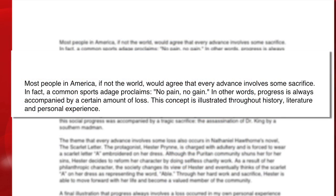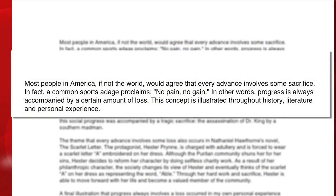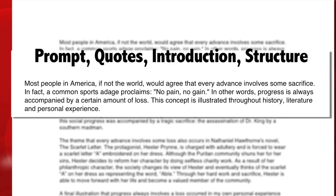The last sentence of the first paragraph I call a roadmap. The roadmap here is: 'This concept is illustrated throughout history, literature, and personal experience.' That's a pretty representative intro for an essay — it encapsulates the prompt, gives some quotes and a broad sweeping introduction, then hits the reader with the structure. We're going to utilize history, literature, and personal experience.